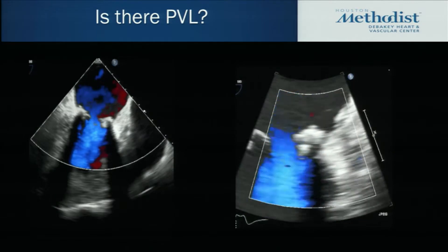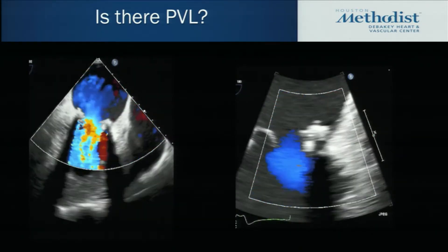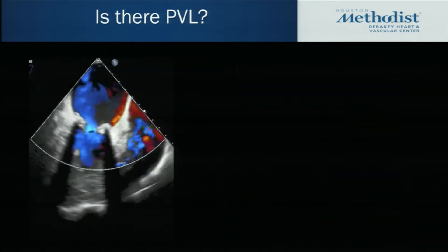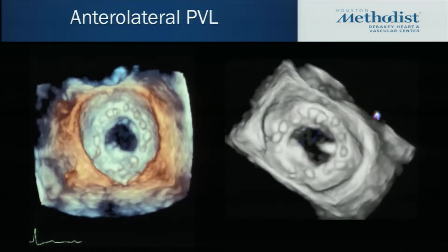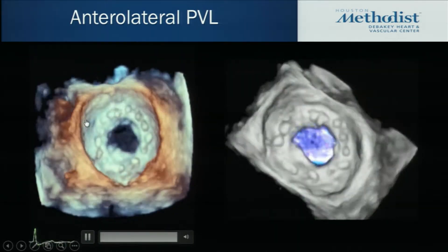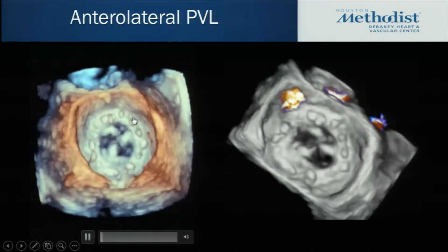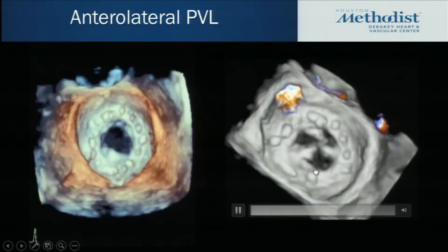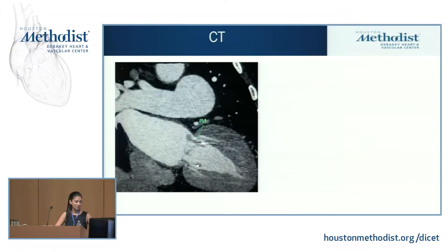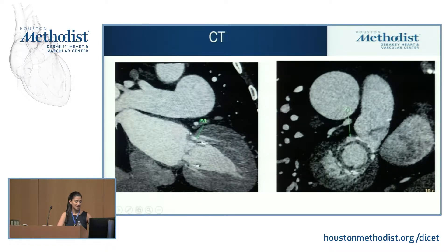There was a subtle clue on continuous wave interrogation — the gradient was elevated, and comparing flow across the mitral valve to that of the aortic valve suggested mitral regurgitation. We then obtained a transesophageal echocardiogram, and there's a lateral perivalvular jet clearly located outside of the valvular ring. On 3D images, we can see a defect around 11 o'clock anterolaterally, with significant perivalvular regurgitation located anterolaterally. A CT scan also demonstrated the presence of this anterolateral perivalvular leak and is important to determine the size, extent, and help in procedural planning.